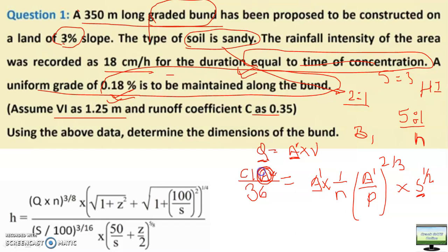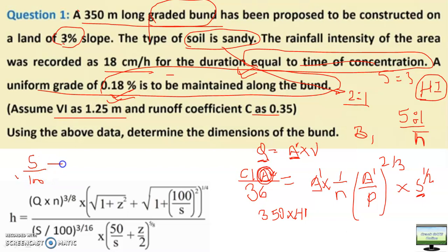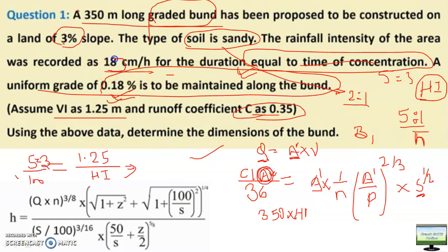The catchment area will be equal to 350 meters (length) into width, where width is the distance between bunds, which is the horizontal interval. The horizontal interval can be calculated using the formula: S/100 = VI/HI, where VI is given as 1.25 and land slope S is 3, so you can calculate HI. The value of C is 0.3, rainfall intensity is 18, and 36 is the constant — so you can equate these values.